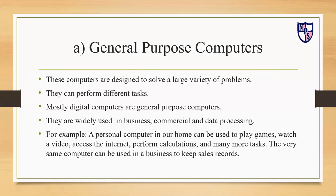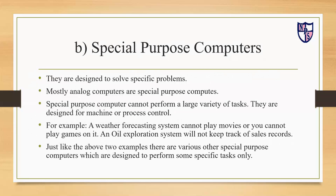The second type is special purpose computers. They are designed to solve specific problems only. They are mostly analog computers. Special purpose computers cannot perform a large variety of tasks — they can only perform a smaller amount of tasks. They are designed for machine or process control.